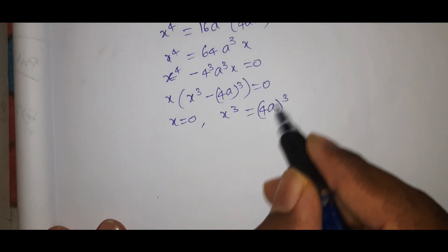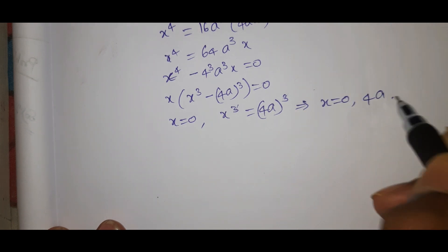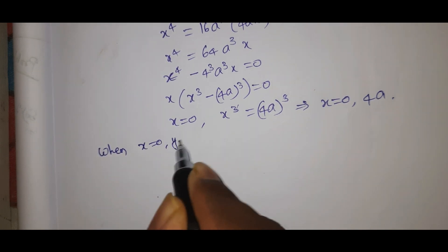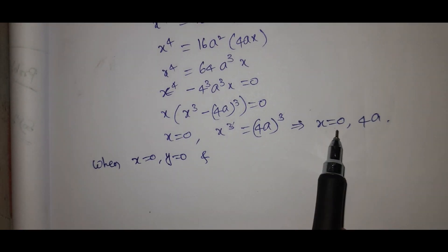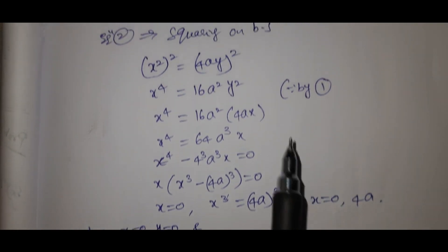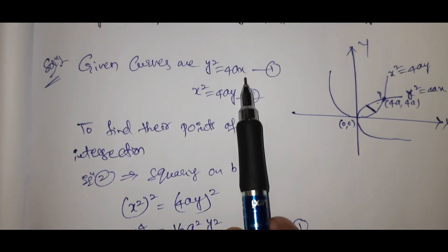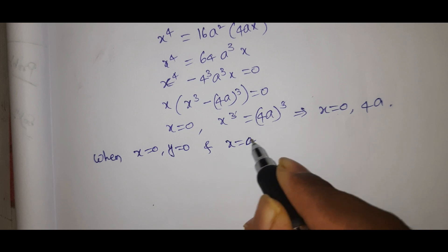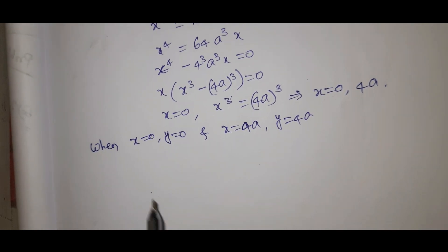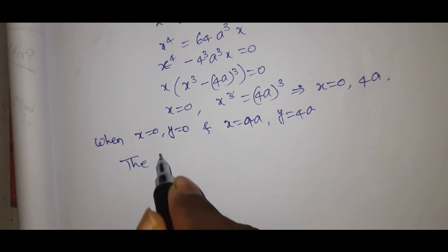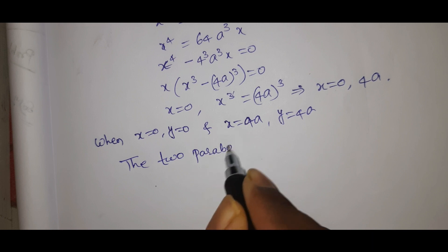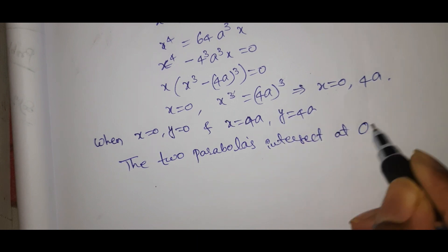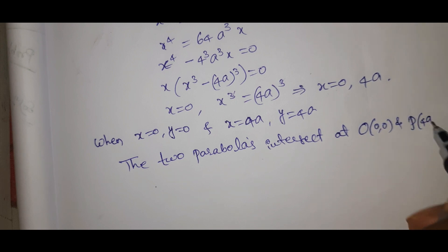This gives x=0 or x=4a. When x=0, y=0. When x=4a, y=4a. So the two parabolas intersect at the origin (0,0) and at point P(4a, 4a).